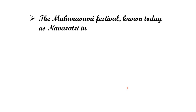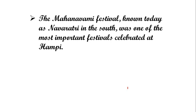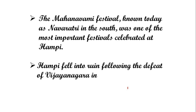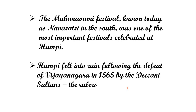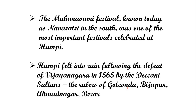The Mahanavami festival, known today as Navratri, was one of the most important festivals celebrated at Hampi. However, Hampi fell into ruin following the defeat of Vijayanagara in 1565 by the Deccani Sultans — the rulers of Golconda, Bijapur, and Bidar — who attacked Hampi and took control of the southern region, causing the decline of Hampi.